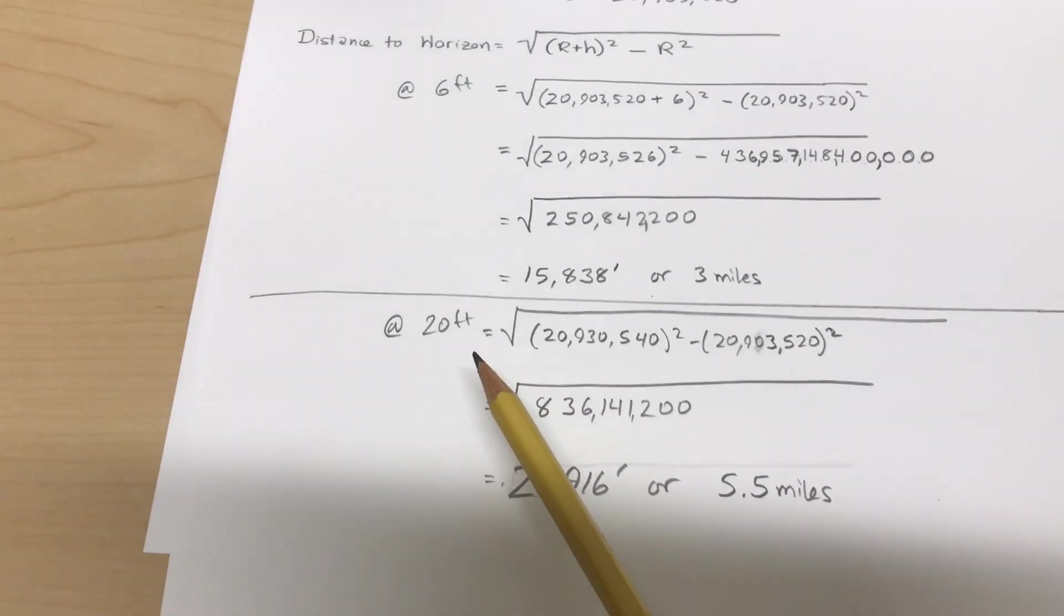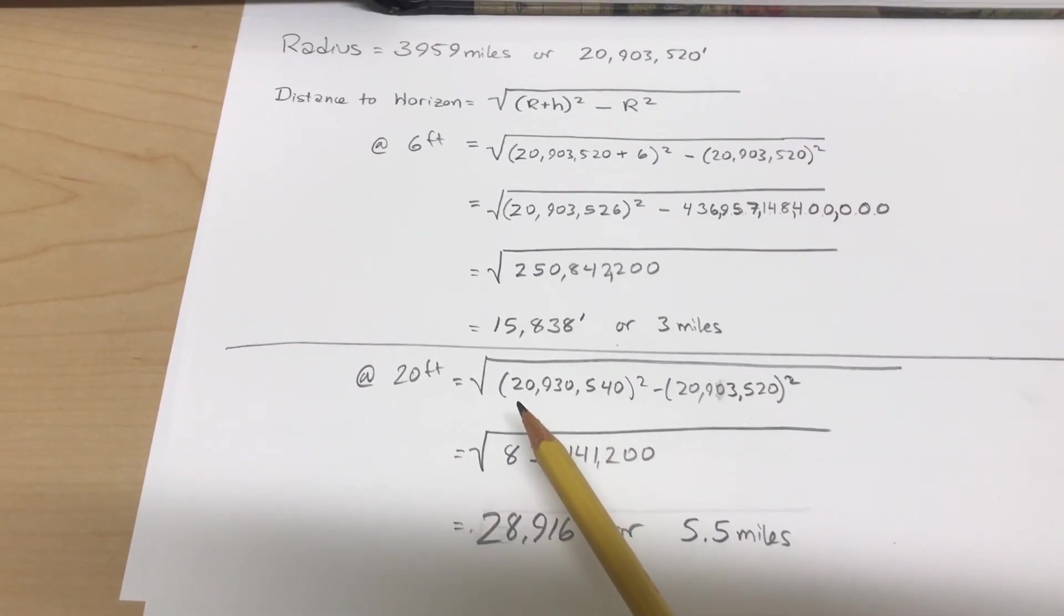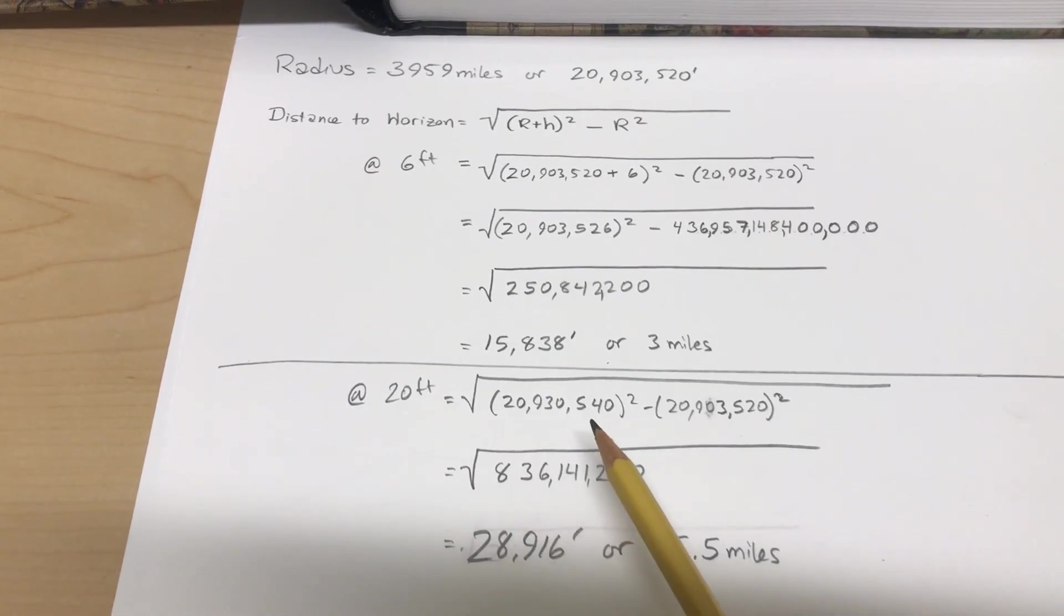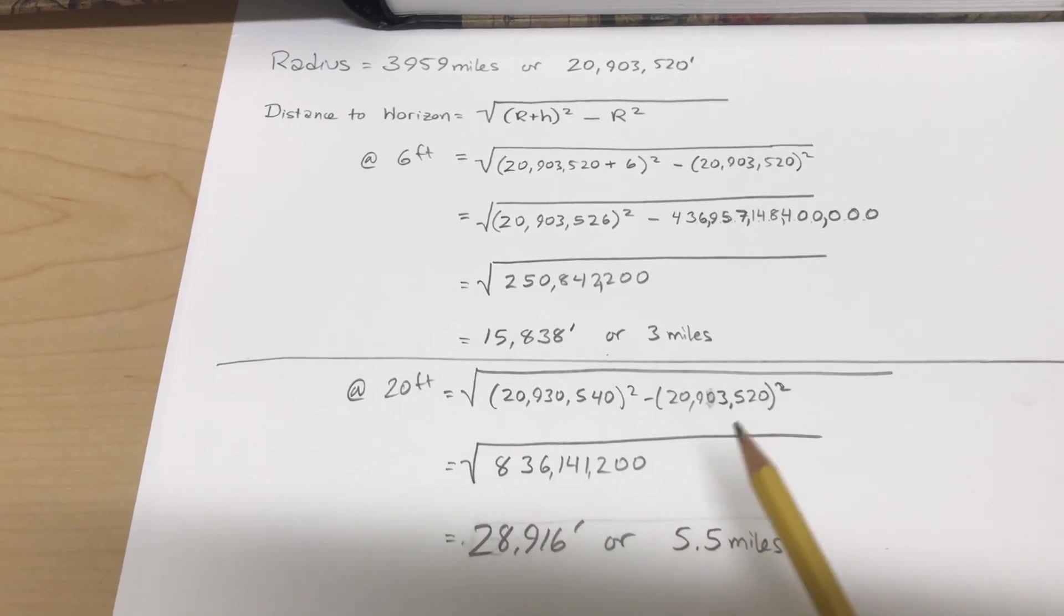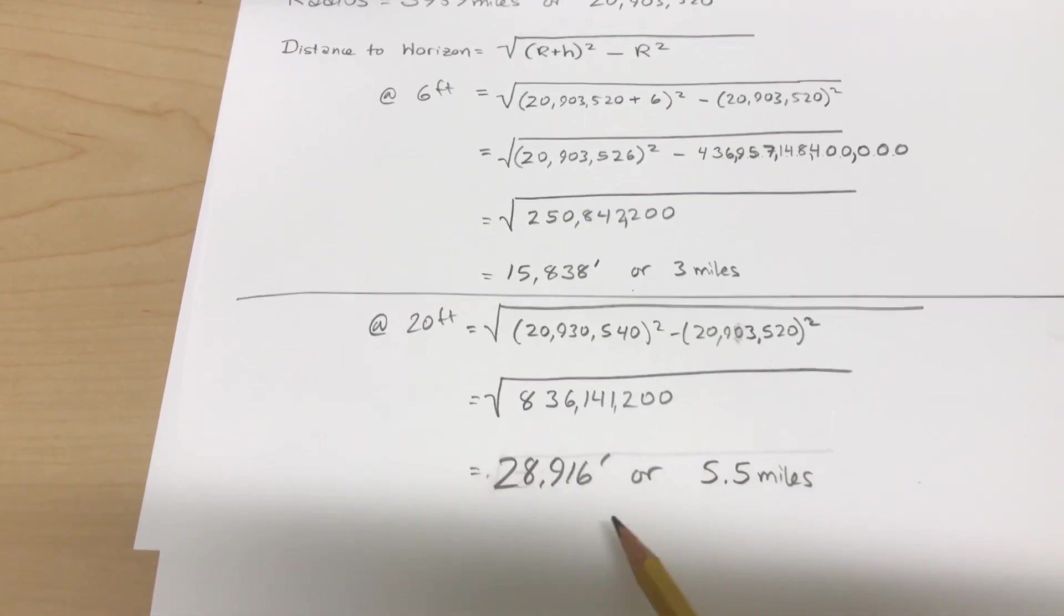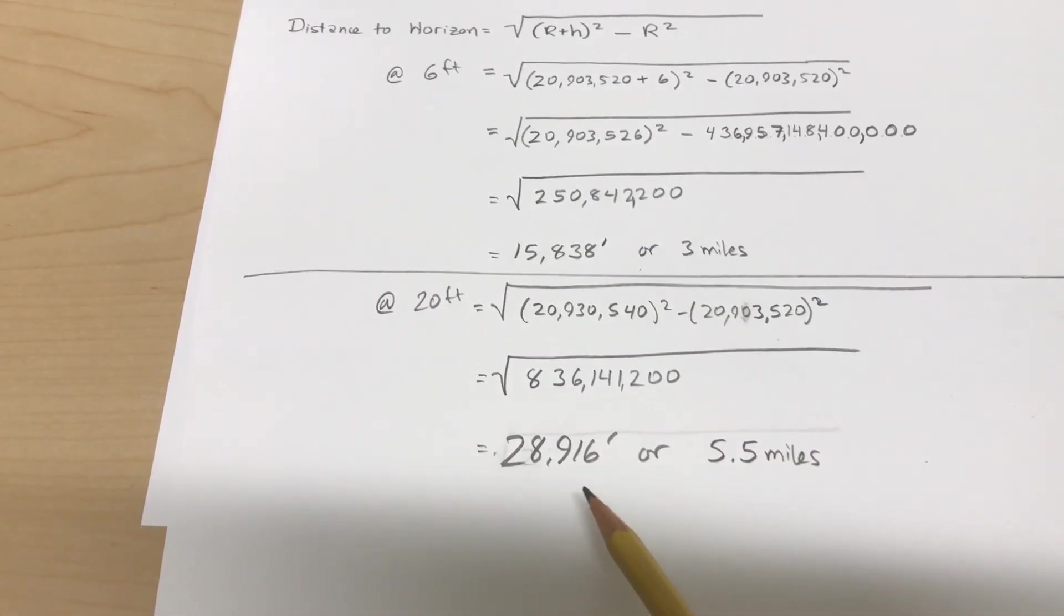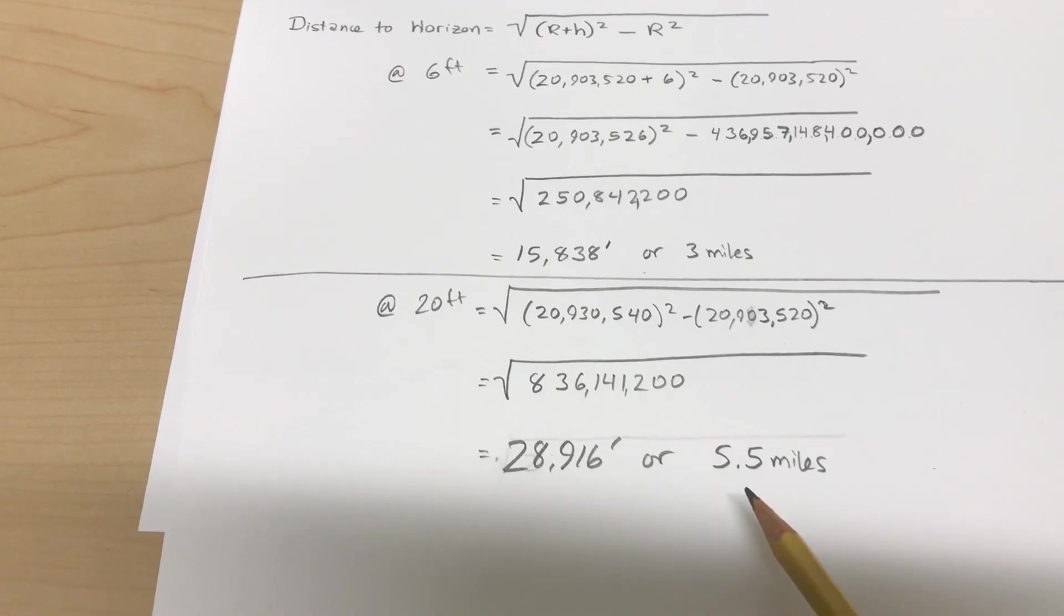And then at 20 feet, we have pretty much the same thing. So we're adding 20 instead of 6, and we're subtracting still just the radius squared. We'll come up with this, and then our final result is 28,916 feet or 5.5 miles.